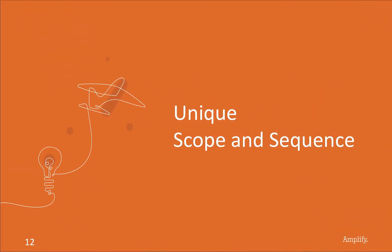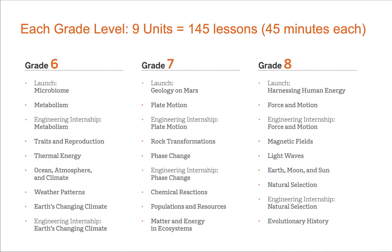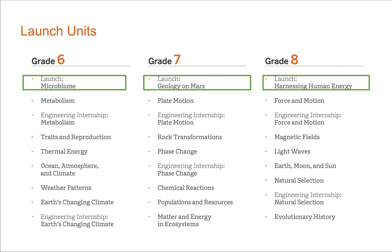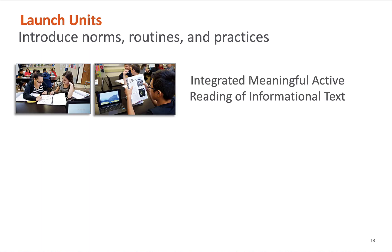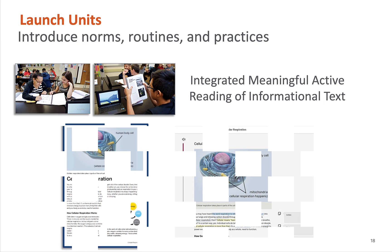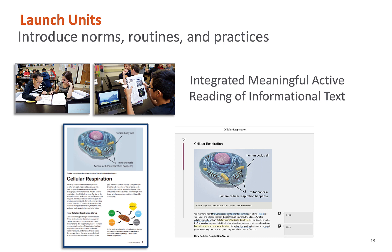Let's explore our units and unique scope and sequence for California. Each grade level has nine units for a total of 145 lessons, each lesson being 45 minutes of instruction. We start the school year with a launch unit such as microbiome, geology and Mars, or harnessing human energy. A launch unit is designed to introduce the norms, routines, and practices that we want students to accomplish as they embark on this new way of learning.